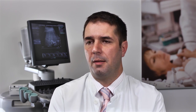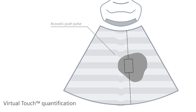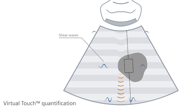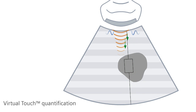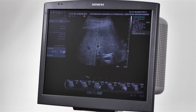Next to the qualitative assessment there is a quantitative assessment. This is a different principle: the transducer transmits a strong sound push pulse into the tissue, followed by a measurement of how fast the shear waves are propagating laterally. The propagation of the shear waves is dependent on tissue stiffness — the stiffer or harder the tissue,